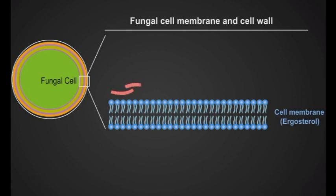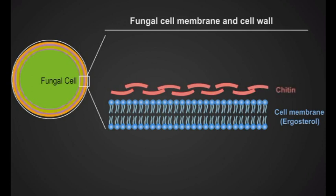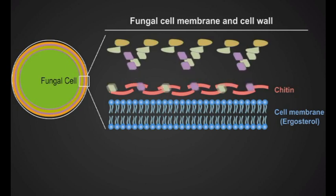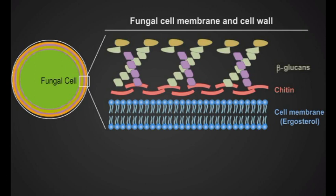Fungi have an outer cell wall like bacteria. But compared to bacteria, the first external layer is composed of chitin and not peptidoglycan. Next to the chitin layer is a cross-linked beta-glucan blocks. The most external fungal structure is a protein layer.